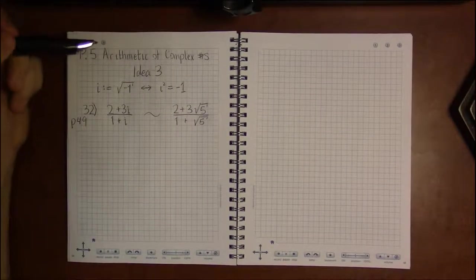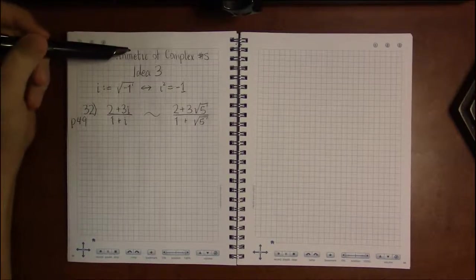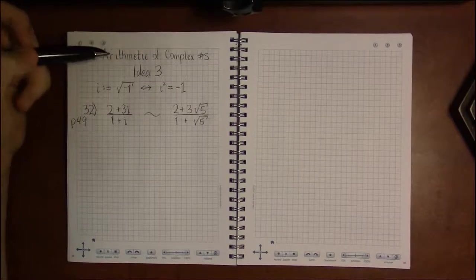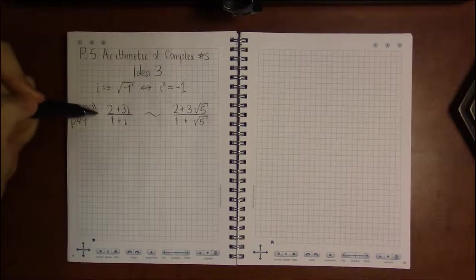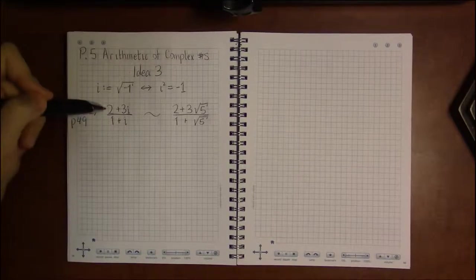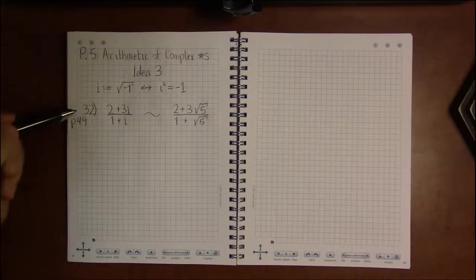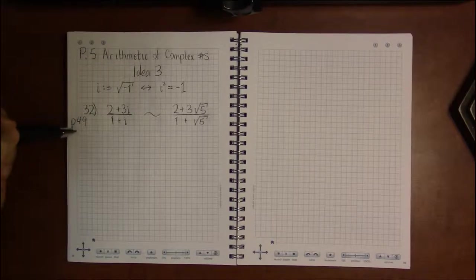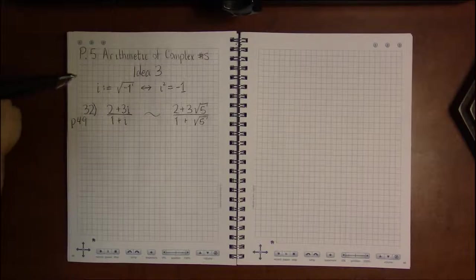Alright, so let's finish up arithmetic of complex numbers. Last thing we have to talk about is division. So I'm looking at problem 32 of p5, and that's on page 49.